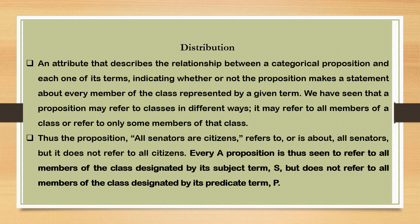Distribution is an attribute that describes the relationship between the terms of the categorical proposition — how one term is distributed with regard to the other. Consider 'All senators are citizens,' an A proposition. Here you are talking about all S, so all of S is distributed — in A propositions the subject term is distributed. However, nothing specific is being said about the entire predicate class, so the predicate is not distributed.